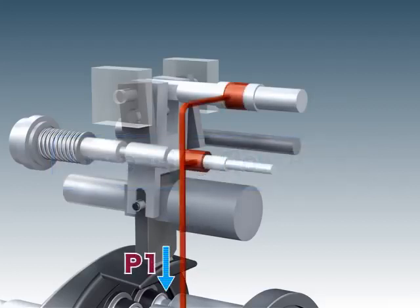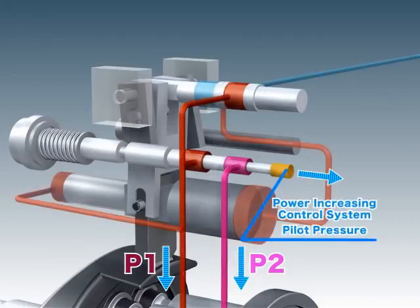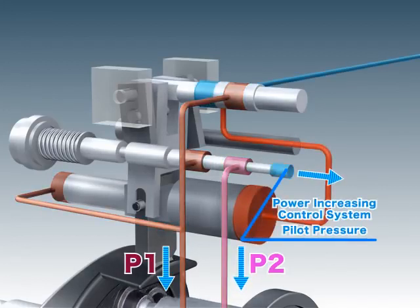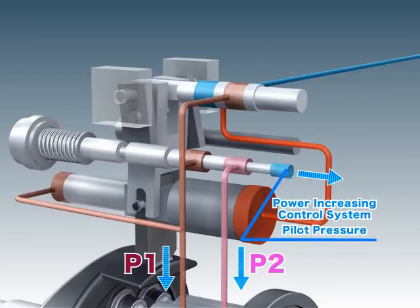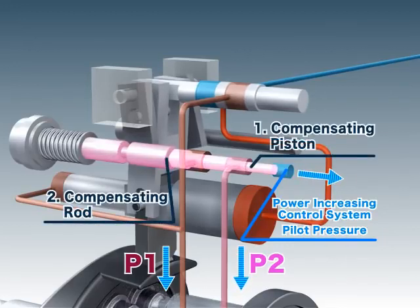When the delivery pressure of the pump, P1, or of a companion pump, P2, decreases, or when the pilot pressure is released by the power-increasing control system, the compensation rod and piston are pushed back by their springs.